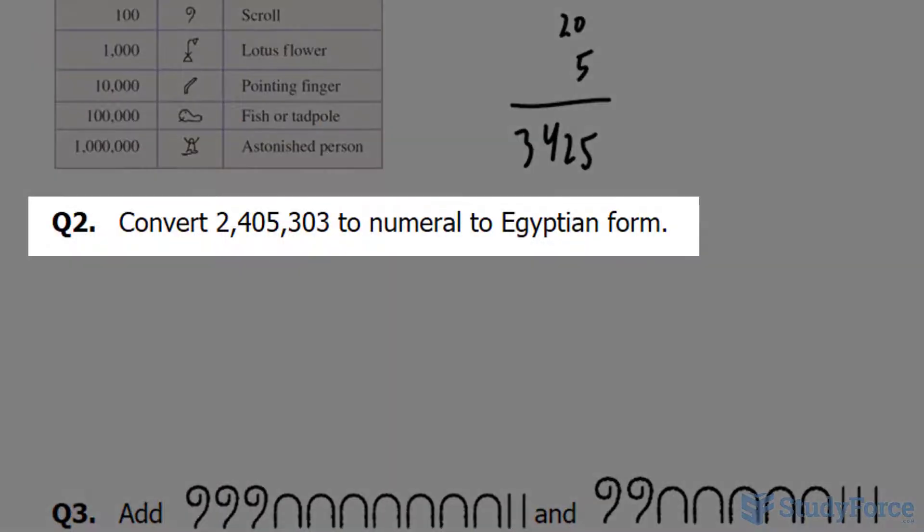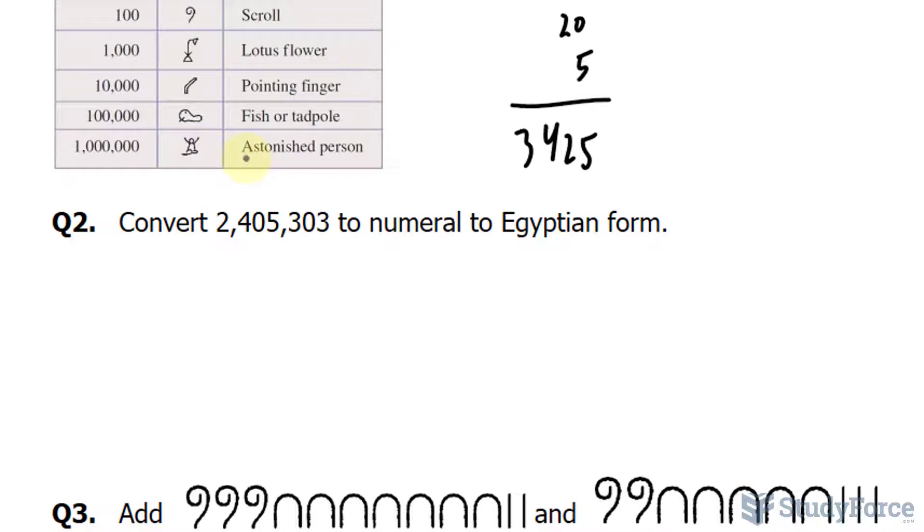In the next example, we are expected to convert 2,405,303. We will be using this astonished person twice, so I'll do my best in drawing that. So we have two of these.